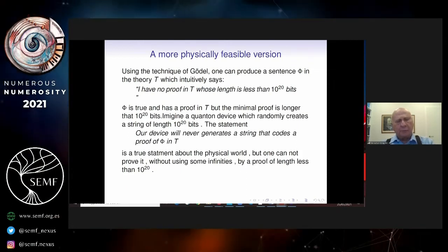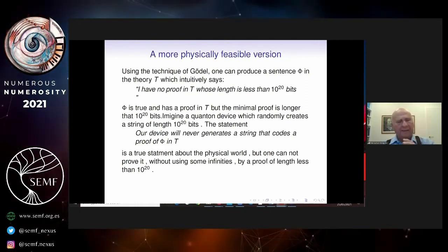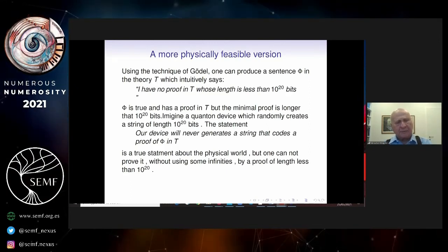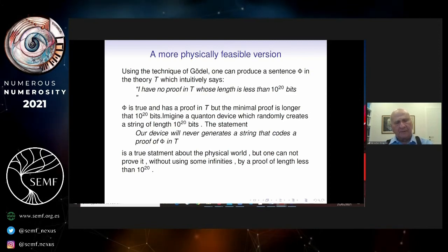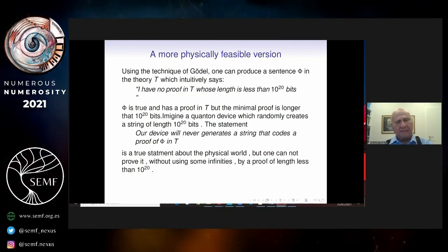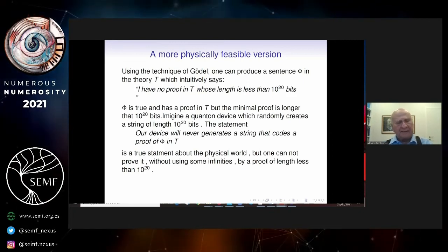Imagine now a quantum device, which randomly creates a string of length 10 to the 20 bits. The statement, our device will never generate a string that codes a proof of phi in T is a true statement about the physical world. But one cannot prove it without using some infinities by proof of length like 10 to the 20.